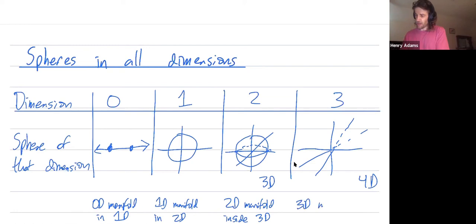And it doesn't fit in any lower dimensional Euclidean space. So the three-dimensional sphere fits in four-dimensional Euclidean space but it does not fit in three-dimensional Euclidean space, etc. So you can do this in all dimensions. You always have an n-dimensional sphere.